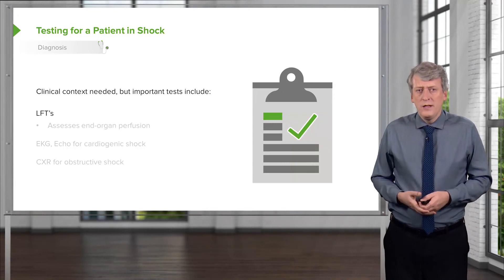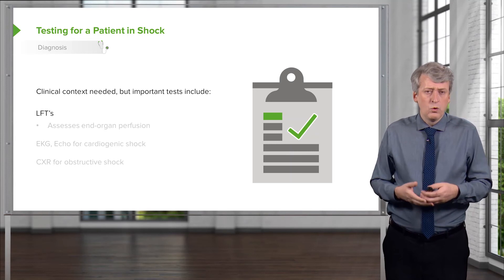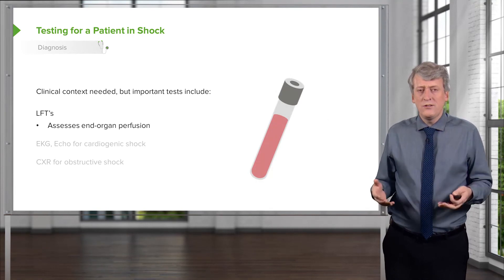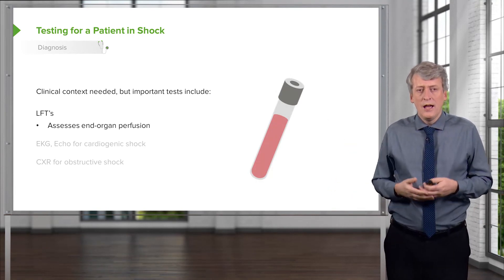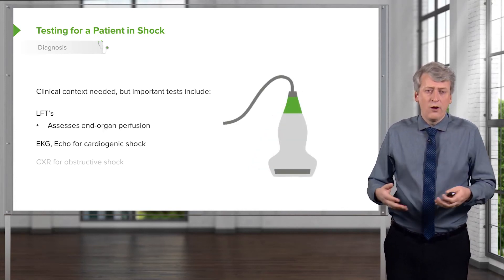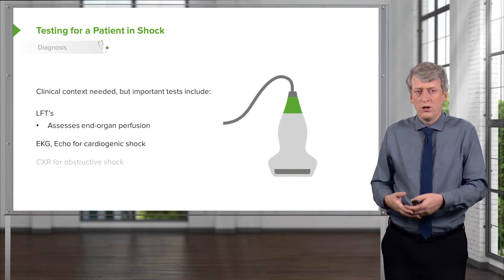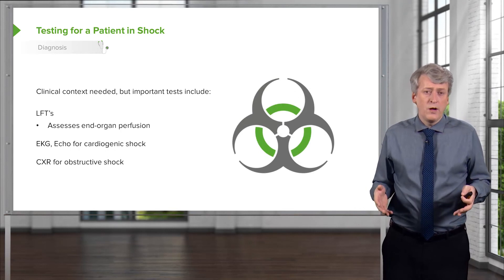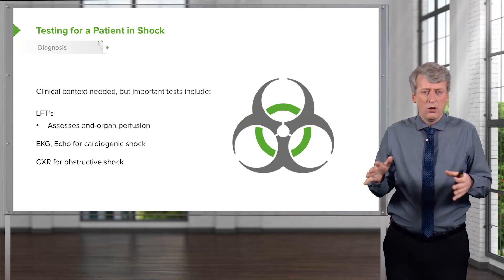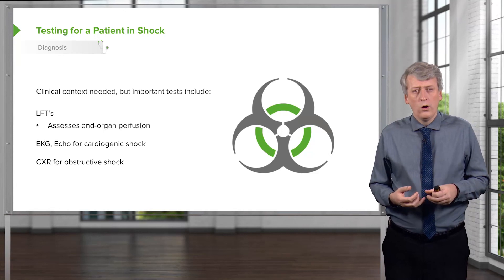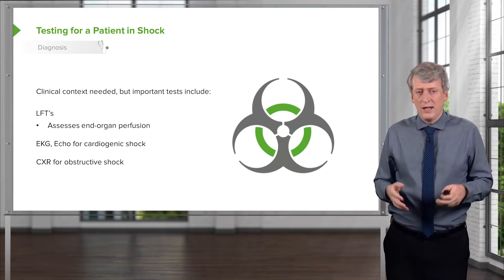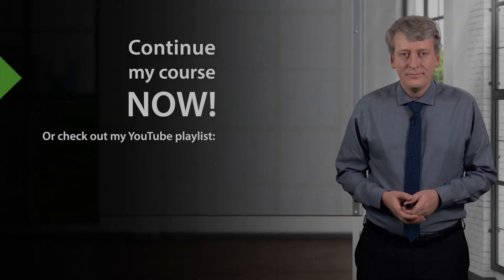If it's severe shock and we're worried about end organ damage, liver function tests are important because we'll usually see a bump in ALT and AST from hypoperfusion of the liver. An EKG and echo may be important for identifying causes of cardiogenic shock. A chest X-ray may be valuable if you're worried about obstructive shock — it could show a large mediastinum and enlarged heart for a pericardial effusion, or a tension pneumothorax, although hopefully tension pneumo has been picked up clinically before obtaining a chest X-ray.